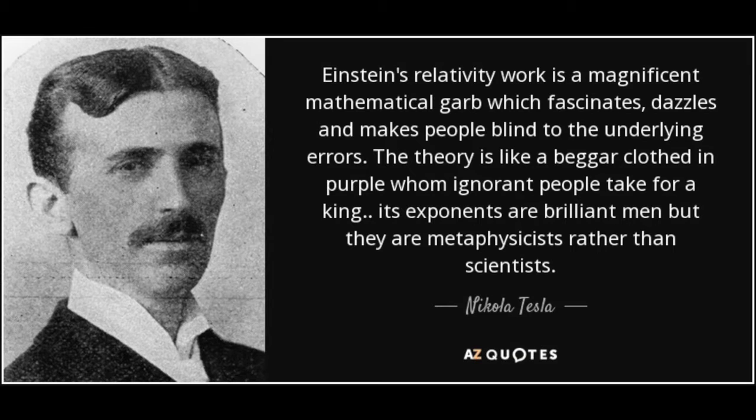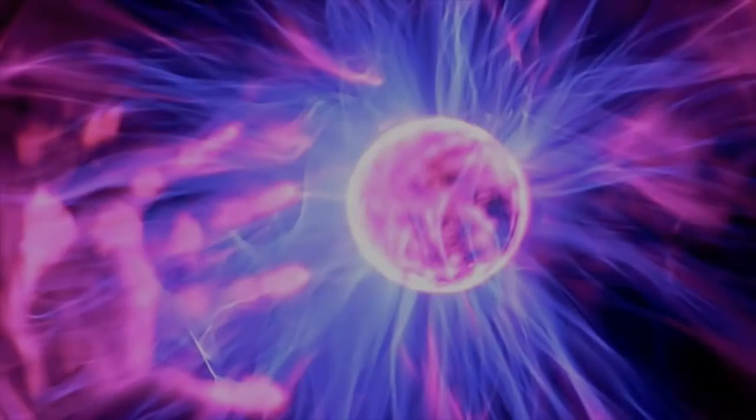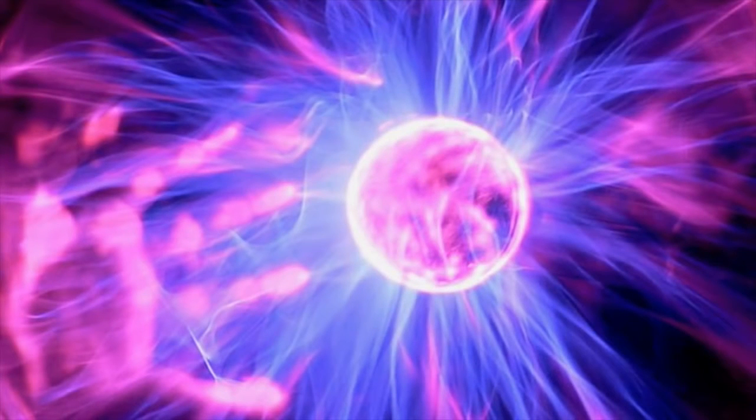So if gravity doesn't exist, then what's the force that pulls us down to the earth? Why do things fall down instead of up? The answer is electromagnetism. Researcher and author Anthony Patch states, in short, the accurate model of the mechanisms governing the functioning of our known universe is that of electromagnetism, not gravity.